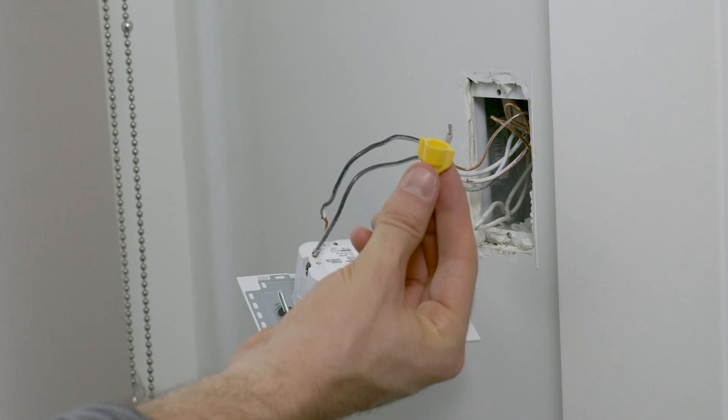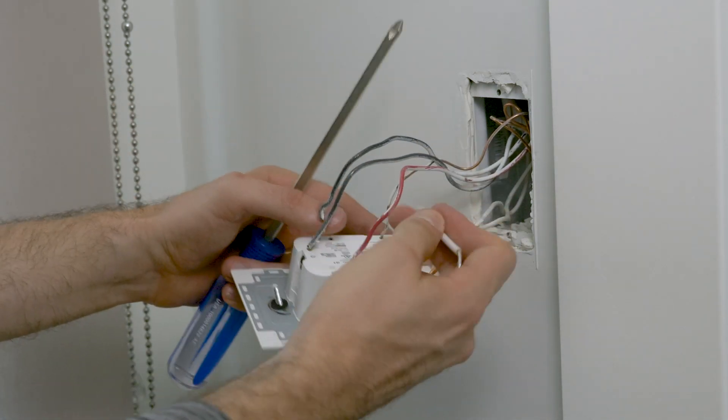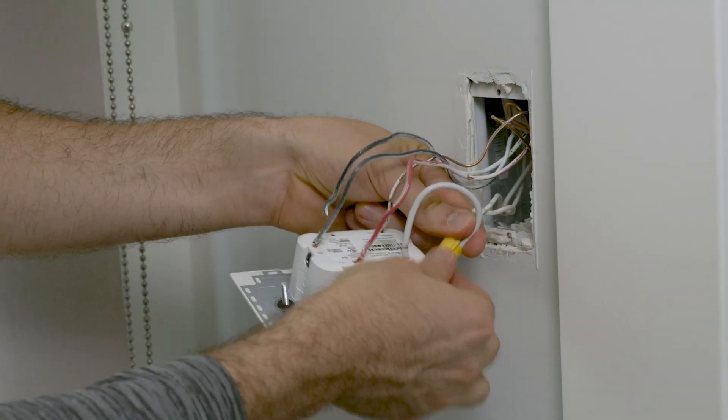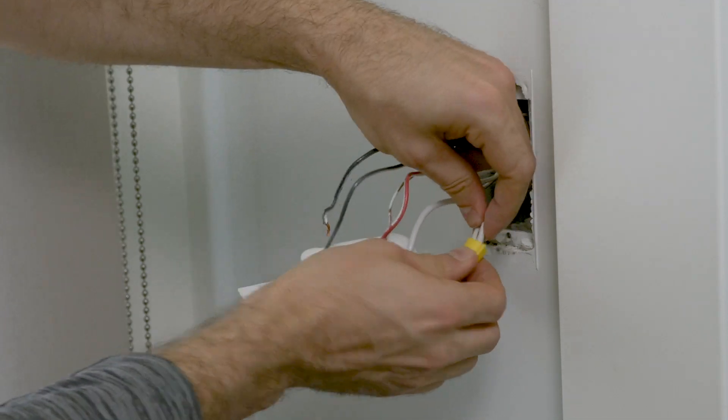Then, I can take the white wire extension and connect it to the neutral wire cluster. Here, I will be using the existing wire nut in my gang box.